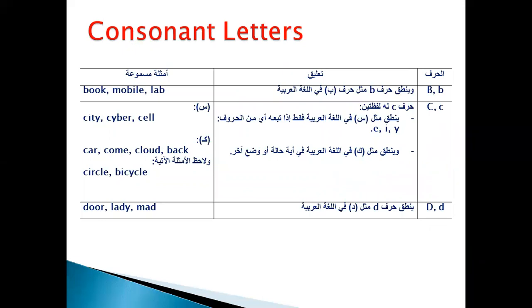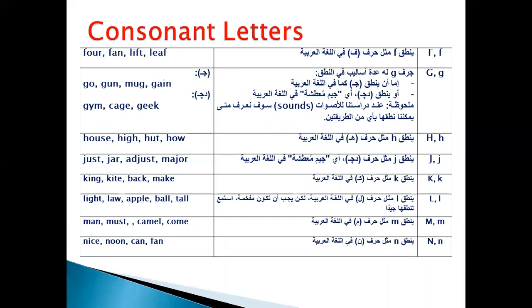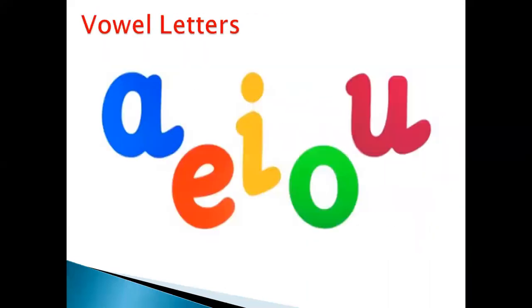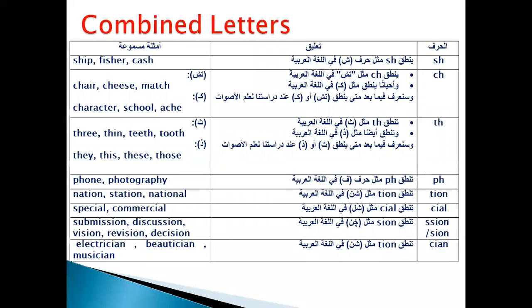The first one was consonant letters, and the other one was the vowel letters, okay. And also we got the combined letters, like SH, like CH, TH, PH, and so on.